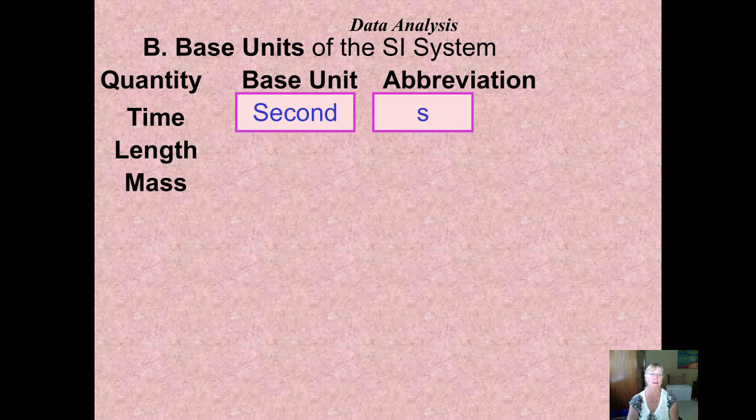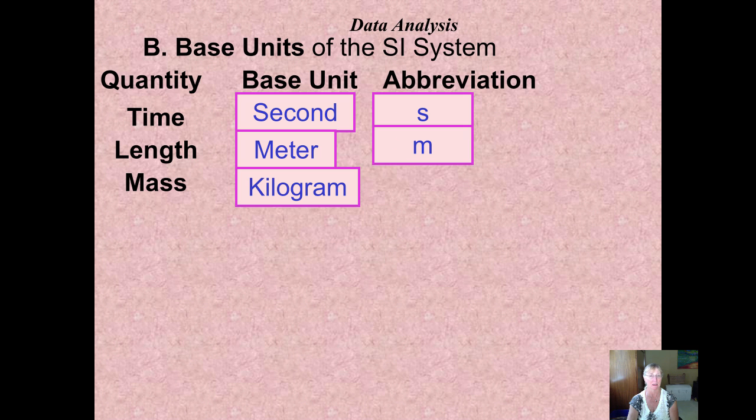Our length unit of measurement will be the meter. Here's where it gets confusing. Its abbreviation is the small letter m, and there's other things that have that abbreviation too, so hold that thought.